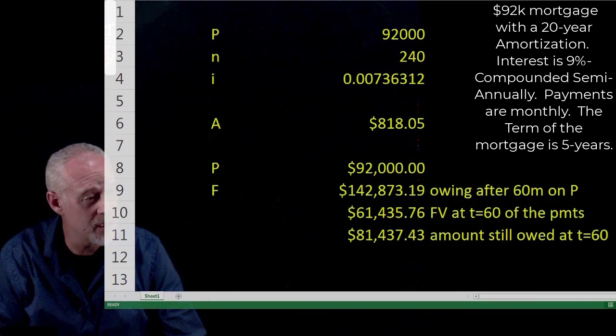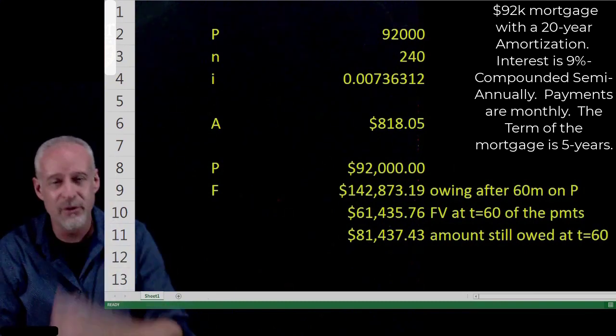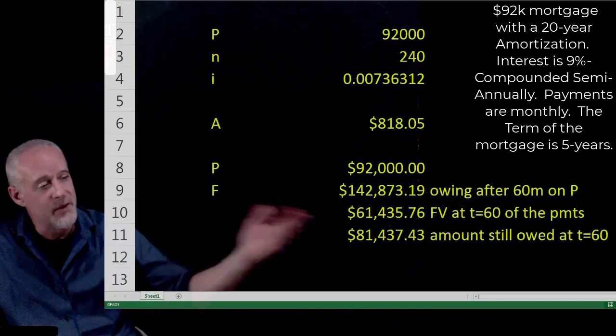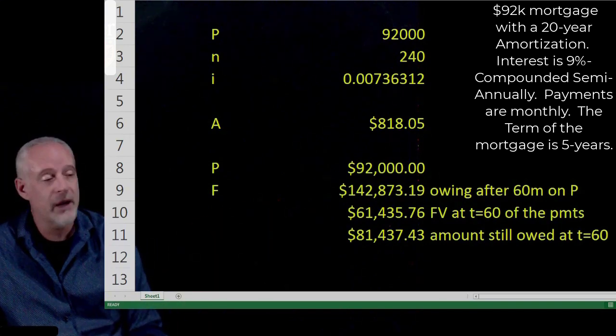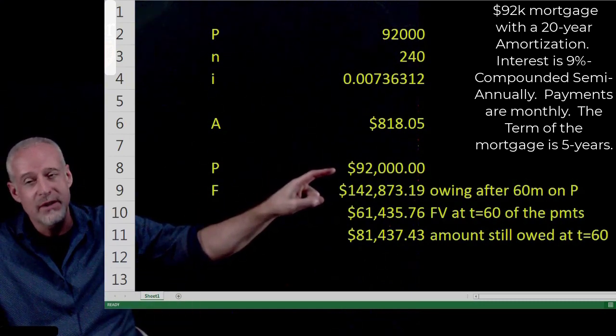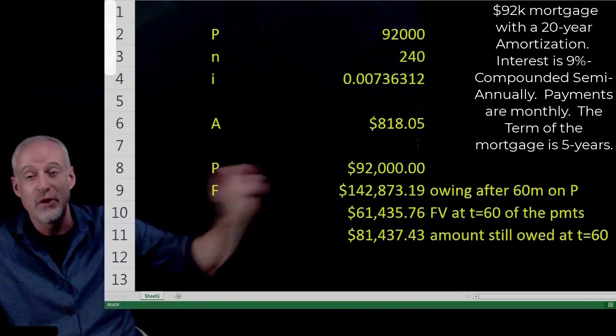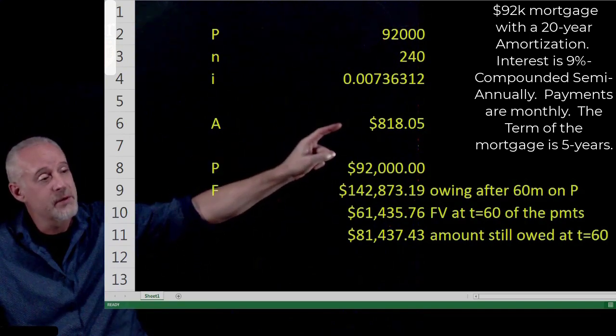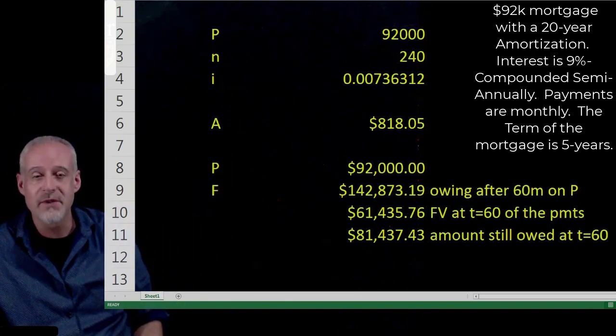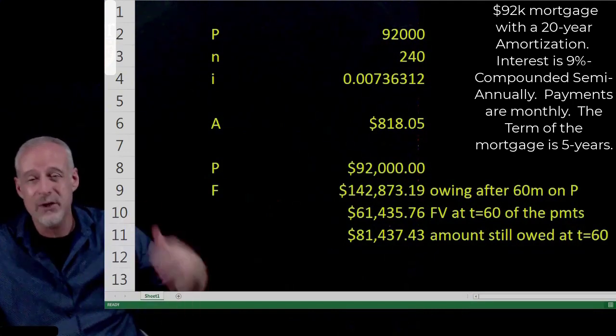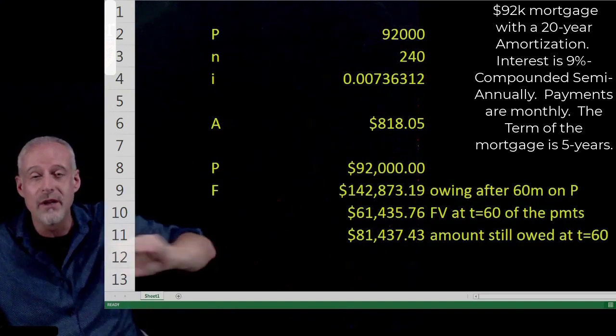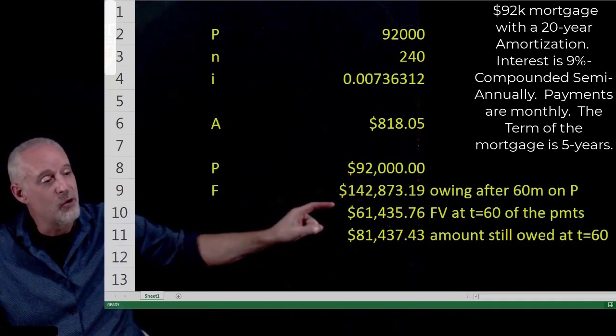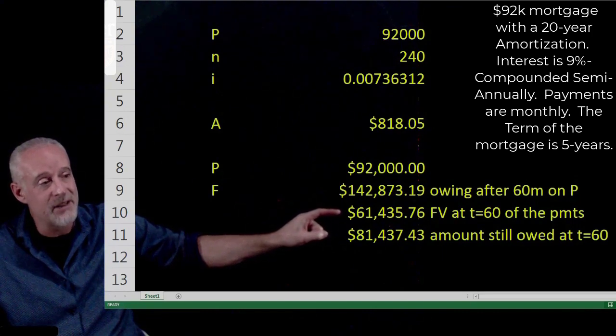And this is maybe a little bit counterintuitive, but it is absolutely by far the easiest way to calculate how much money is still owed at the end of, in this case, a five-year term on a mortgage that starts out at $92,000. Just to recap, $92,000 is the mortgage at T equal to zero. If we let that grow for five years, that's 60 months, it grows to $142,873. But we know that we're making these payments. We calculated those payments using 240 months because we used the full amortization. But we know that we're actually going to make this dollar amount payment. We can take an annuity of $818.05 for 60 months. And at the end of those 60 months, in the future, the future value of those 60 payments of $818 will be $61,000.